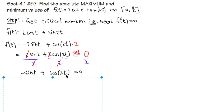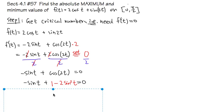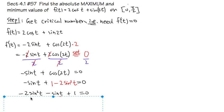To solve this, we use the trig identity: cos(2t) = 1 - 2sin²(t). Substituting this in gives an equation that is actually a quadratic in terms of sin(t), since we have a sin²(t) term and a sin(t) term. Putting it in standard form: -2sin²(t) - sin(t) + 1 = 0.